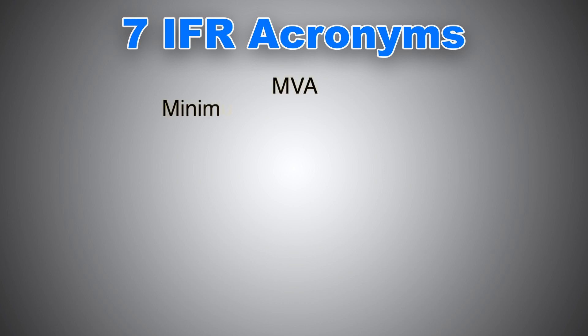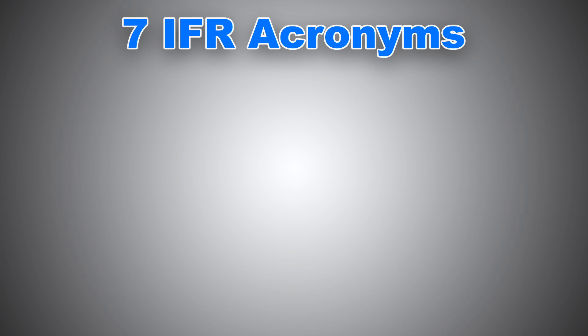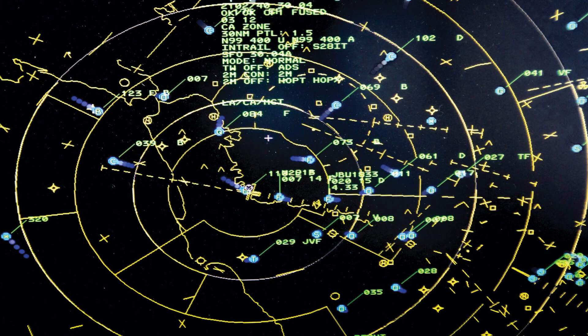Next we have MVA, or Minimum Vectoring Altitude. MVAs are established for use by ATC when radar ATC is exercised. The MVA provides 1,000 feet of clearance above the highest obstacle in non-mountainous areas and 2,000 feet above the highest obstacle in designated mountainous areas. Because of the ability to isolate specific obstacles, some MVAs may be lower than MEA, MOCA, or the minimum altitude depicted on charts for a given location. While being radar vectored, IFR altitude assignments by ATC are normally at or above MVA. Sometimes radar may advise you to descend below MEA — that's fine as long as they have you on their radar screen and you are maintaining two-way radio communication.